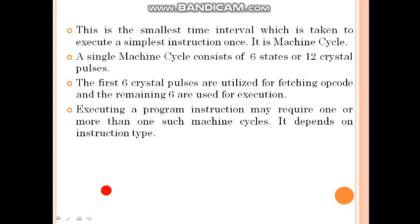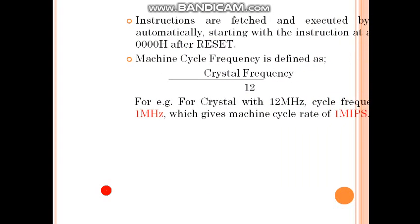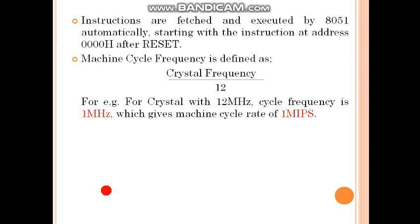The executing program instruction may require one or more than one such machine cycle depending on instruction type. The instructions are fetched and executed by 8051 automatically, starting with the instruction at address 0000h after reset.